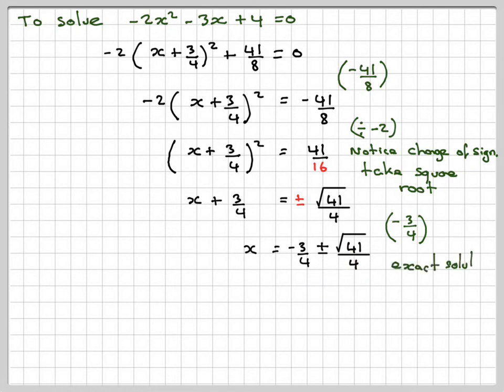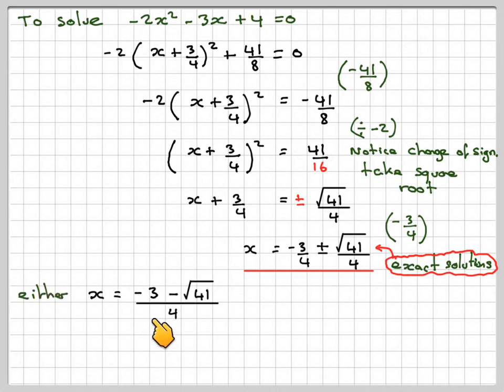Now this is what's known as the exact solutions. Solutions because there's two of them. So either x equals minus 3 minus root of 41 over 4.